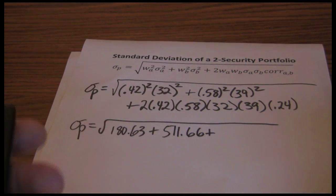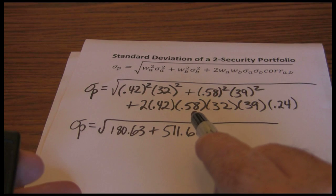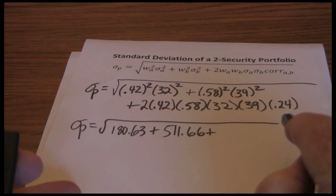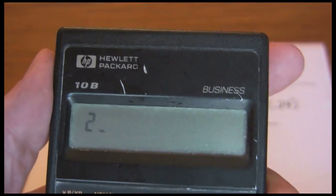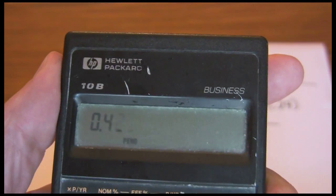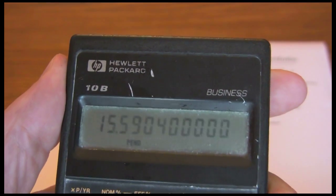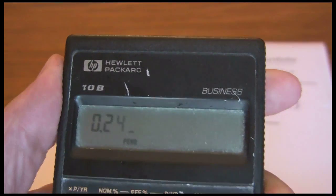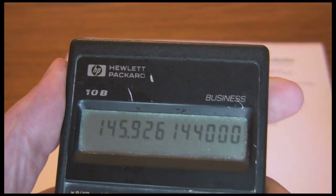And lastly I have 2 times 0.42 times 0.58 times 32 times 39 times 0.24. So let's go through that on the calculator. 2 times 0.42 times 0.58 times 32 times 39 times 0.24 gives me 145.93.